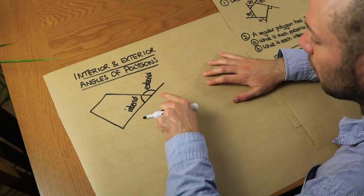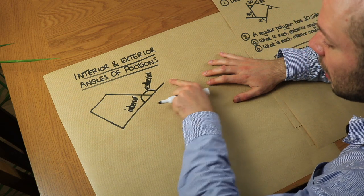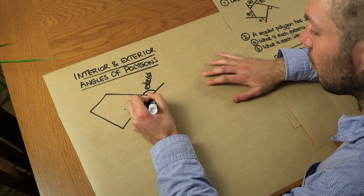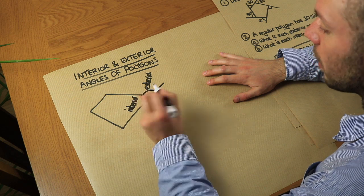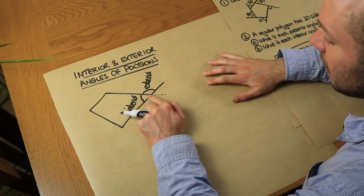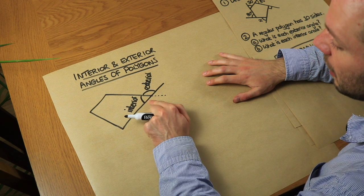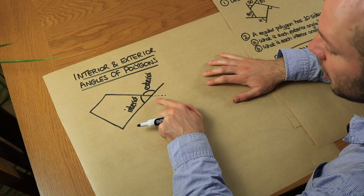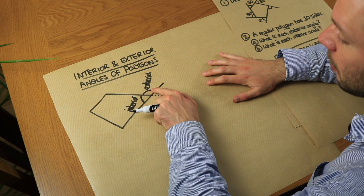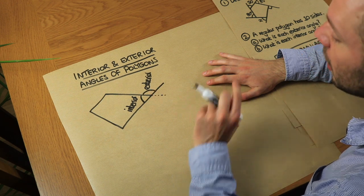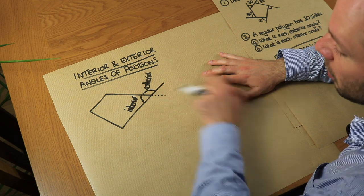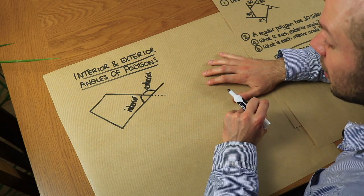You might wonder: does it matter if I extend it out this way or that way? If I extend it out this way, could it be the angle between that extended side and this side? Well, you can see that angle would be the same because they're vertically opposite, so it doesn't matter which way you extend it.